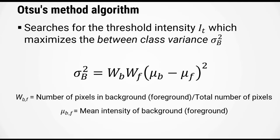Otsu's method works by searching for the threshold intensity that optimally separates the image into two classes, the foreground and the background. It does this by maximizing a metric called the between class variance.